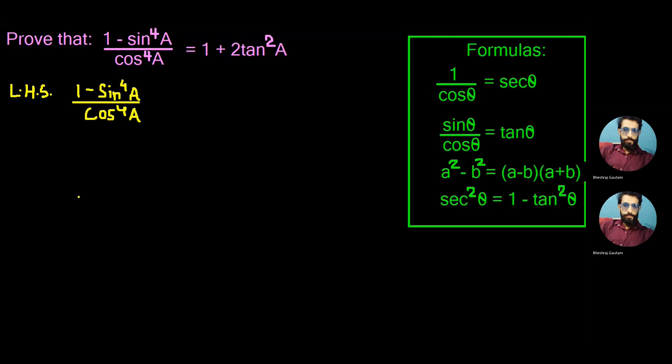Welcome back. Let's solve the given problem in the most common way where we can start from LHS which is given as 1 minus sin to the power 4 whole upon cos to the power 4A.